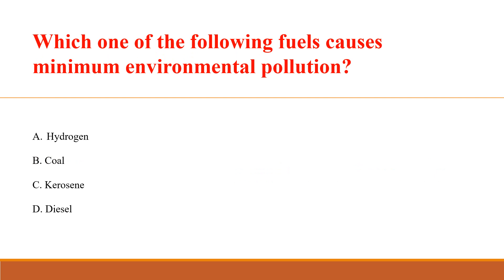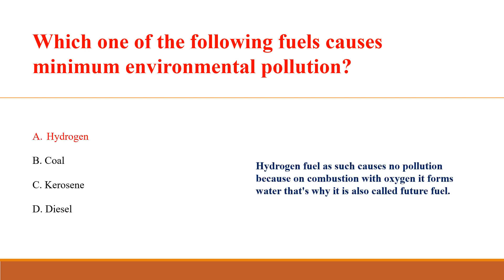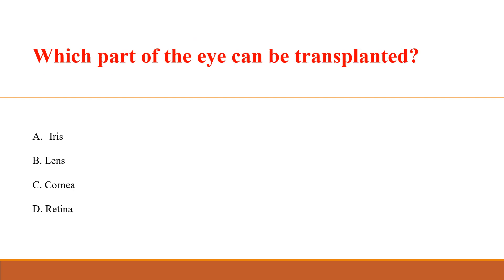Which one of the following fuels causes the minimum environmental pollution? Answer A: Hydrogen. Hydrogen fuel causes no pollution because on combustion with oxygen it forms water. That's why it is also called future fuel.